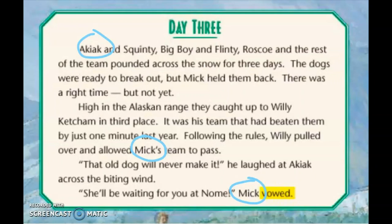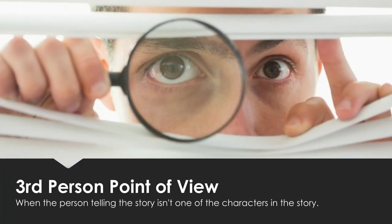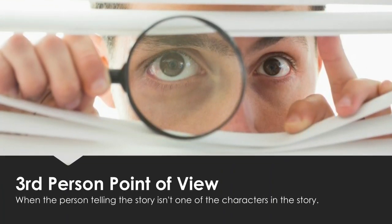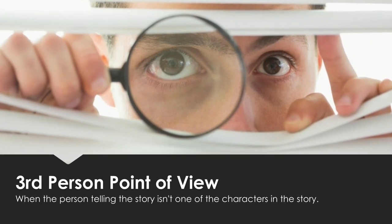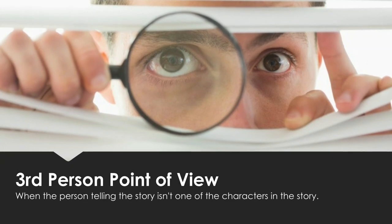We can also look at some of the pronouns — it says 'they caught up with Willie Ketchum's team' and 'it was his team.' This makes me think that the person telling the story isn't any of these characters. This means that Akiak is told in what we call the third person point of view. The third person point of view means that the story is being told by someone who is not a character in the story.